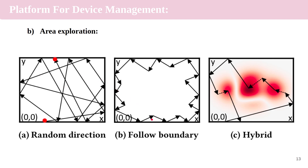The boundary following strategy shows the drone flying in its heading until it recognizes an obstacle, then turning right and left to follow the boundary as closely as possible. The third, hybrid strategy uses random direction by default. During movement, the drone detects an increasing signal strength and follows the signal along a dotted path. At the peak of the signal strength, the drone falls back to the random direction control mode.